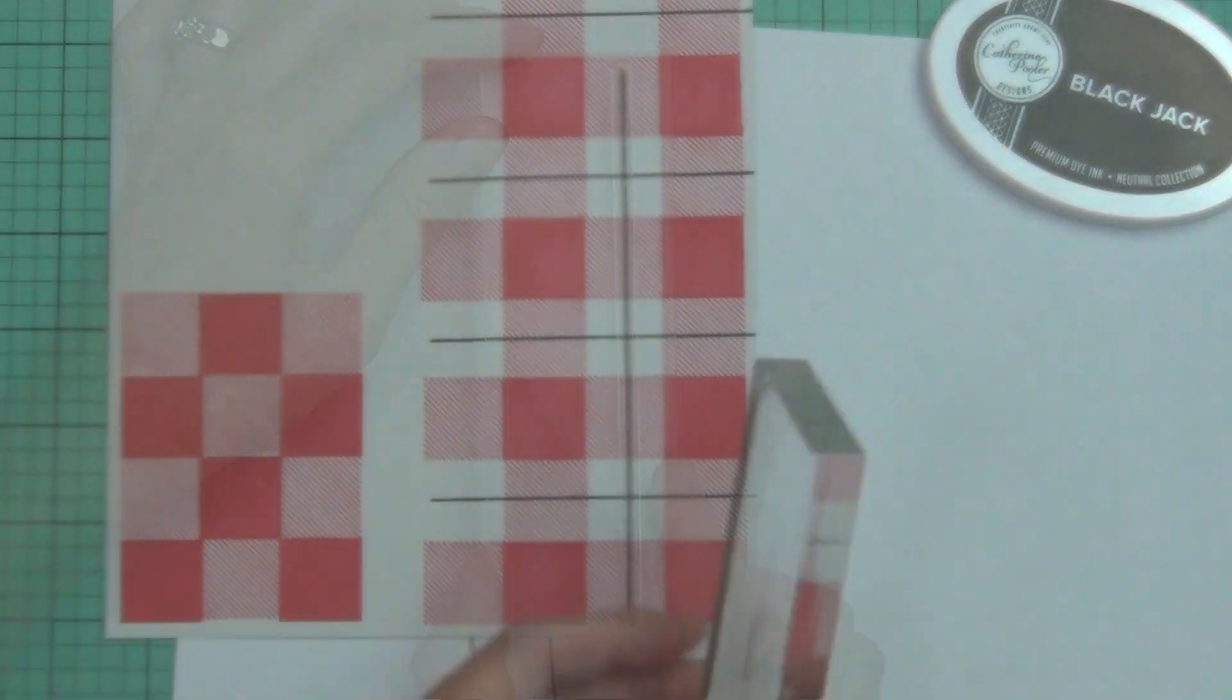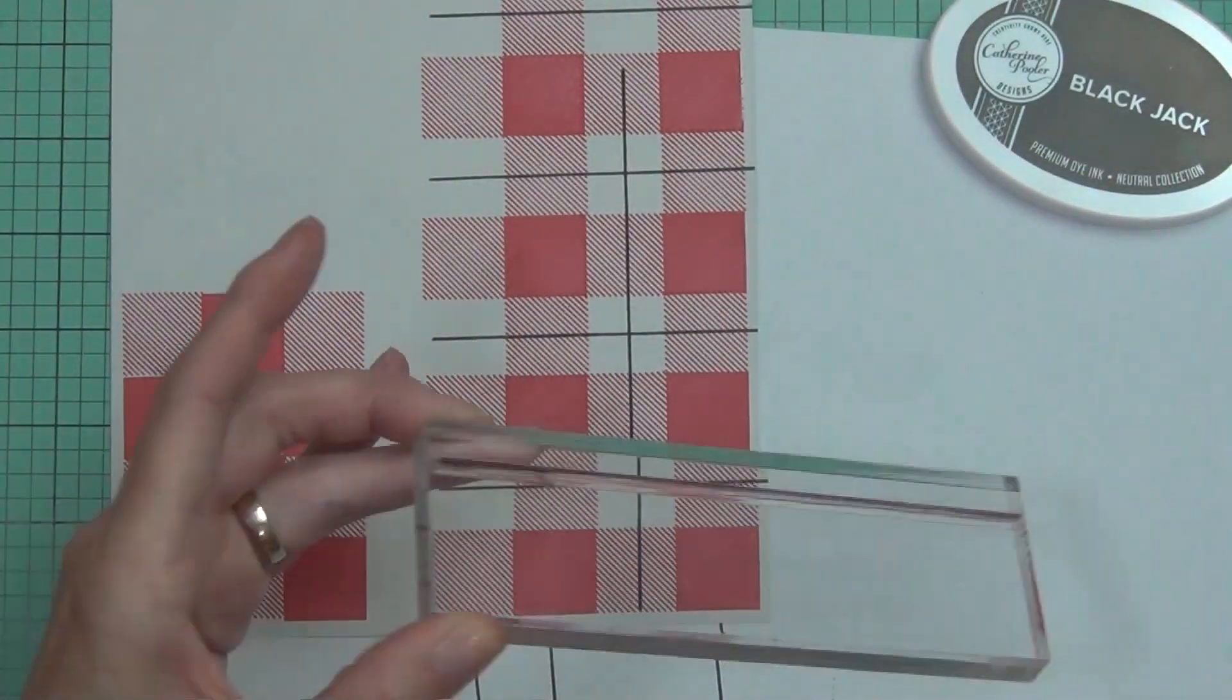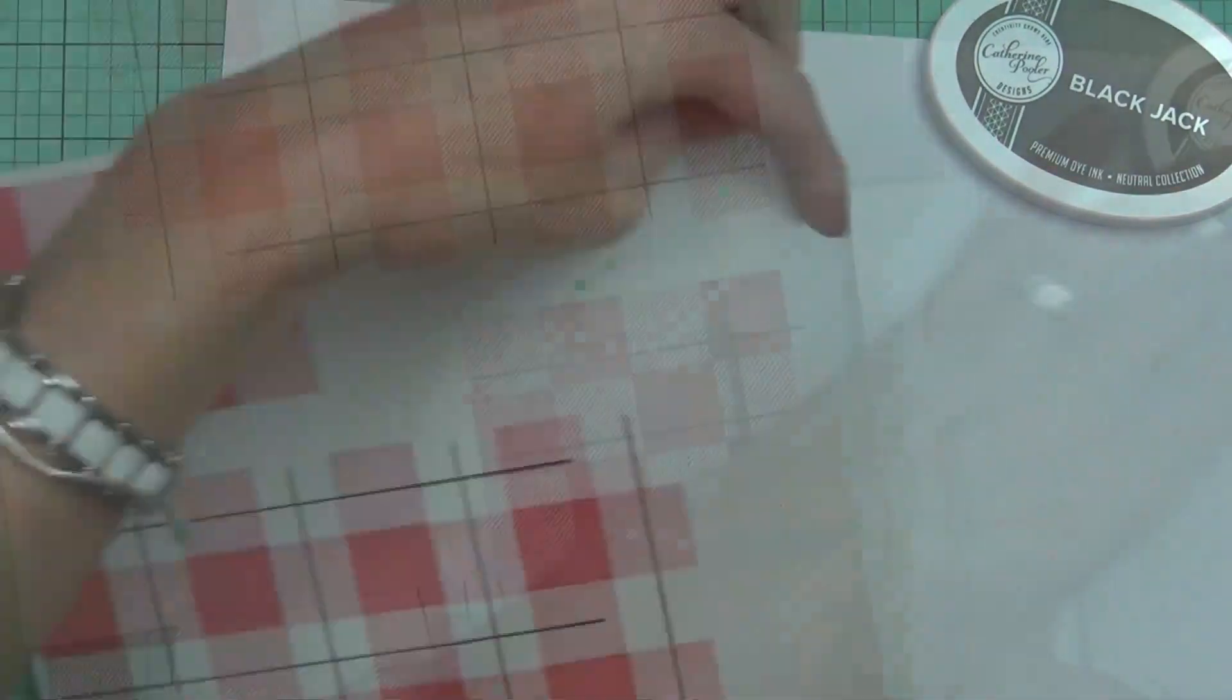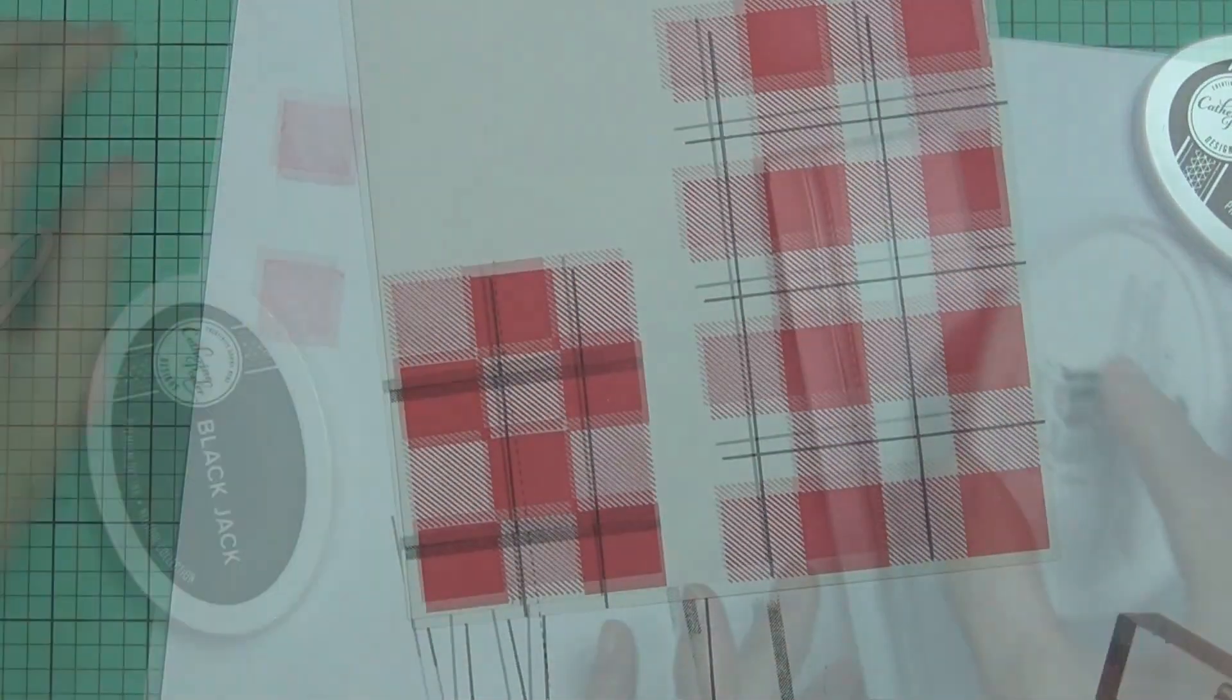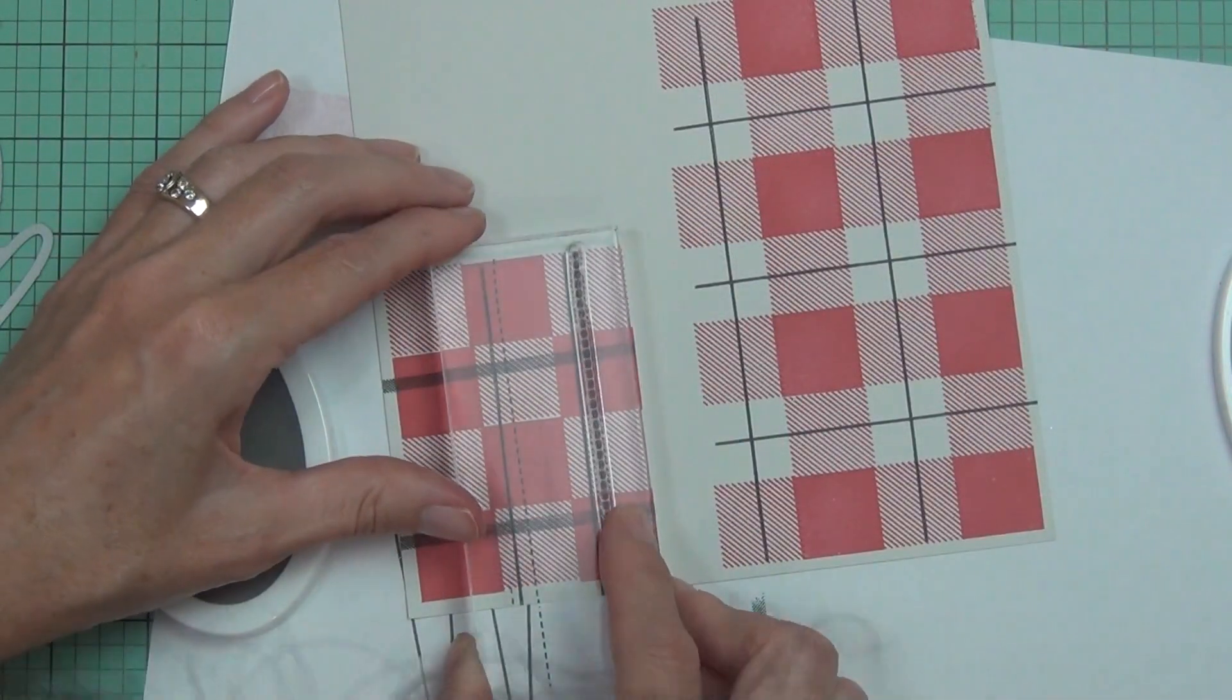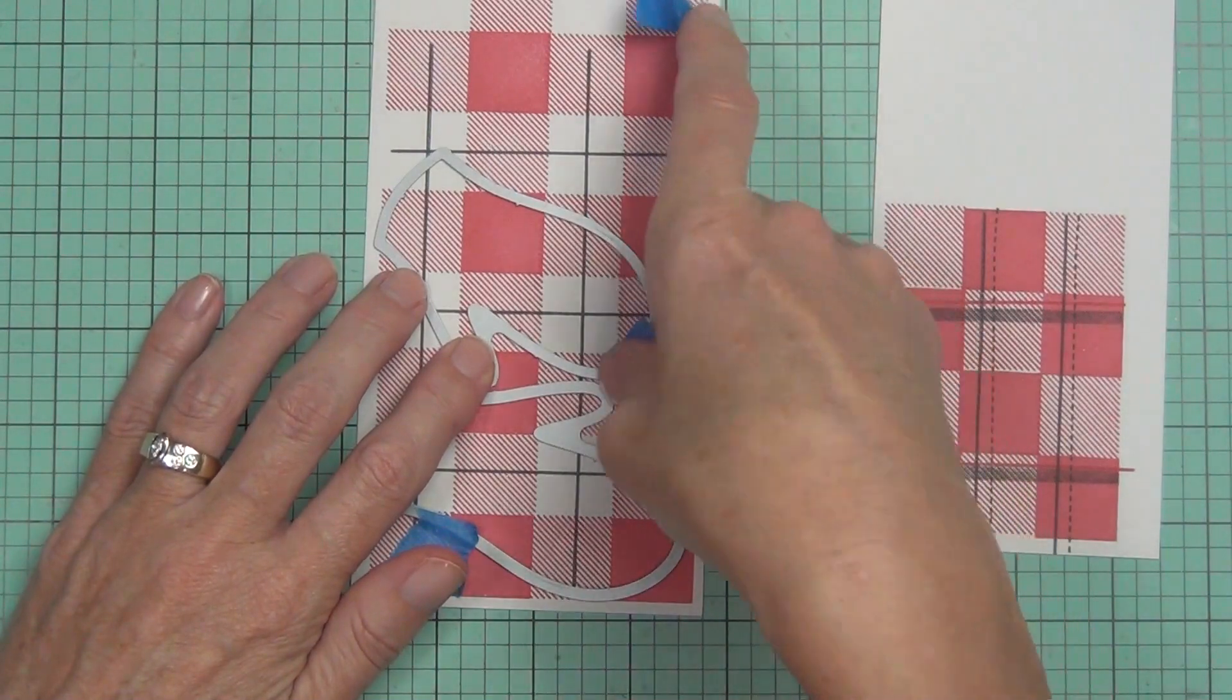I decided not to use a real solid black—this is more like a really dark gray. It's called Blackjack, it's another Catherine Pooler ink. And on this other little piece that I did, I did actually add a couple of extra lines and made it a little bit busier.